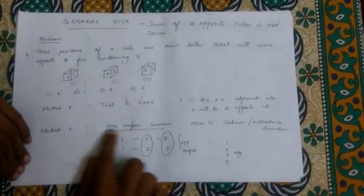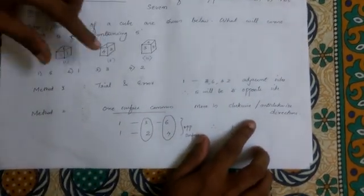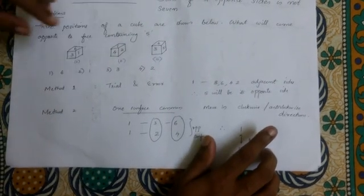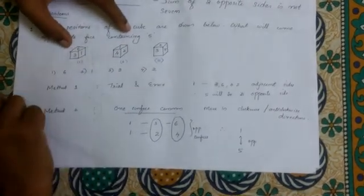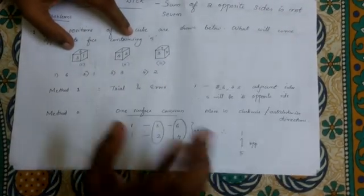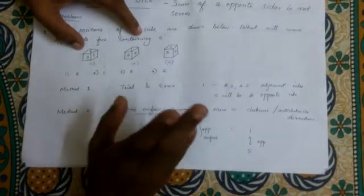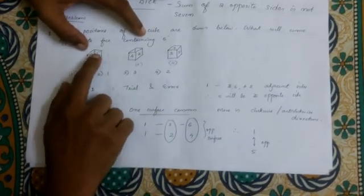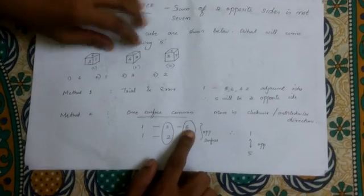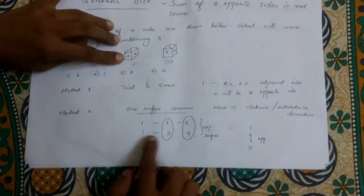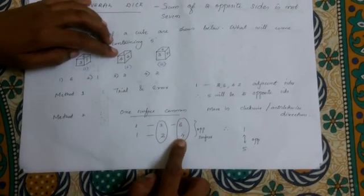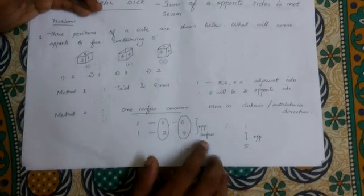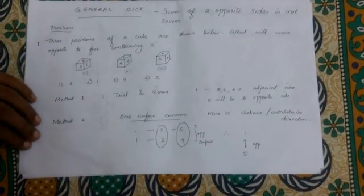For the second method: identify the common surface between the two figures. Using the clockwise direction method — in the first figure, moving clockwise: 1, 3, 6. In the second figure, moving clockwise: 1, 2, 4. From this, 3 is opposite to 2, and 6 is opposite to 4. Going through 3, 2, 6, 4 — the remaining number is 5. So the answer is 5.